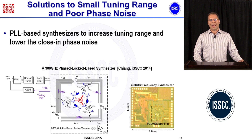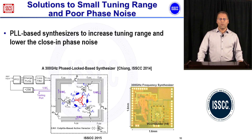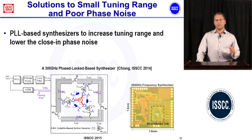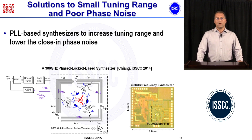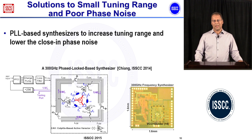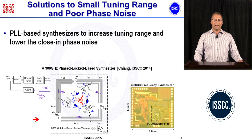Finally, to address limited tuning range and high phase noise at very high frequencies, one solution is to use closed-loop signal sources based on phase-locked loops (PLLs) to lower close-in phase noise and increase tuning range. By co-designing and co-optimizing critical high-frequency building blocks, performance can be further improved. An example is a 300 GHz frequency synthesizer based on phase locking presented at ISSCC 2014.